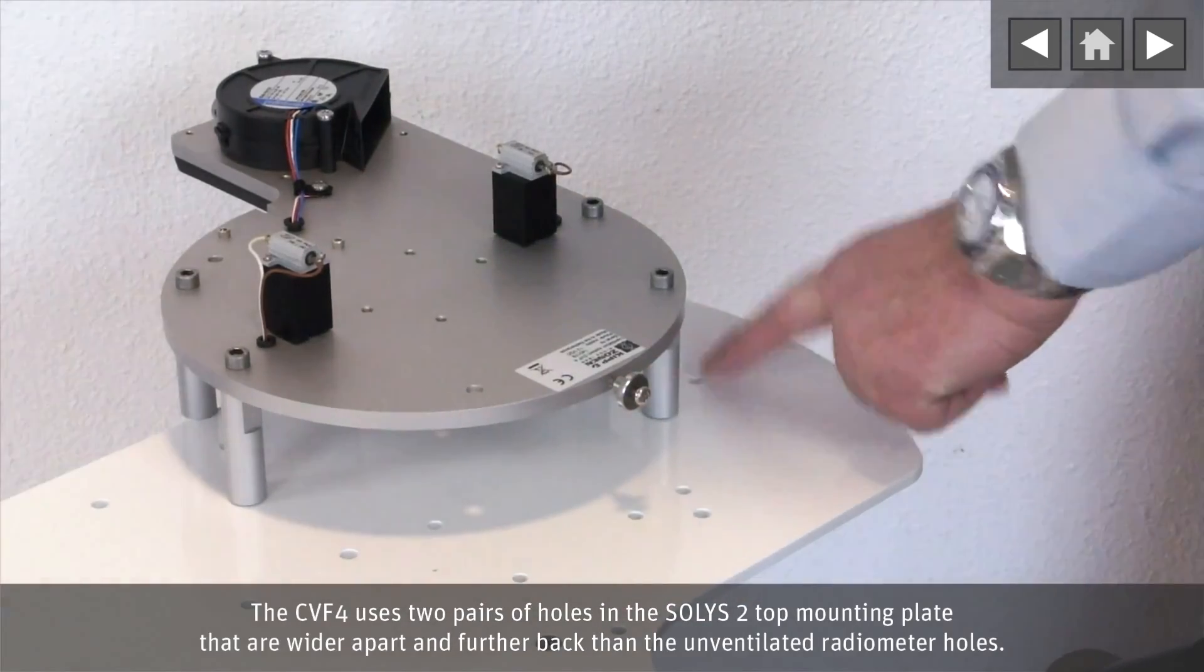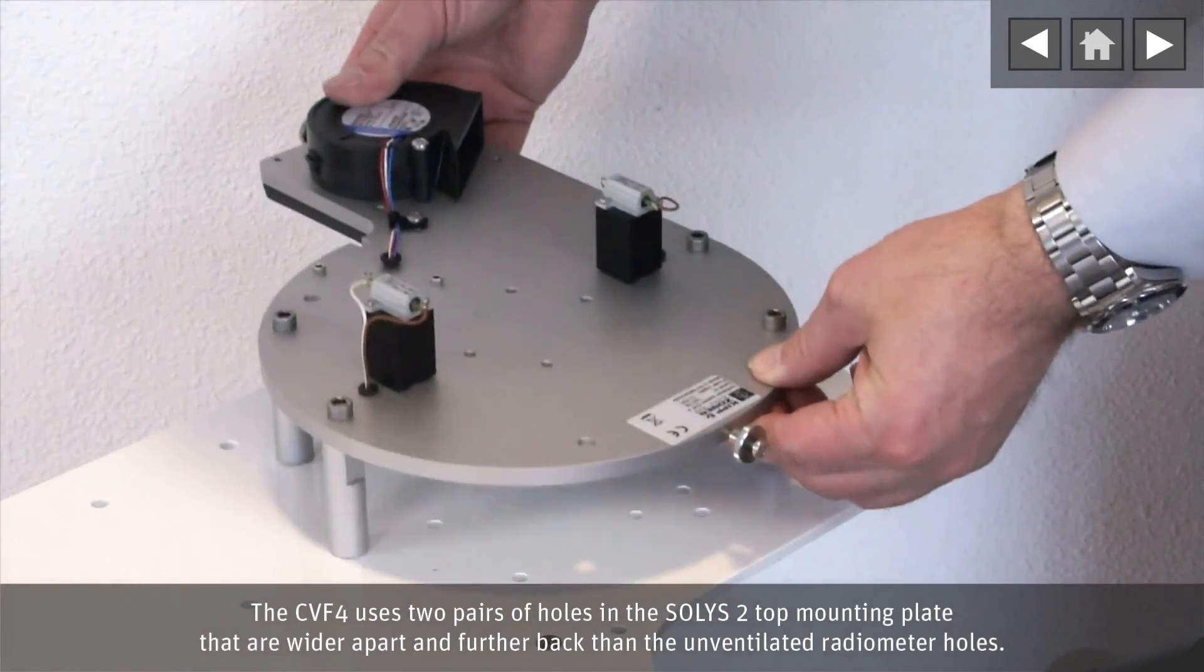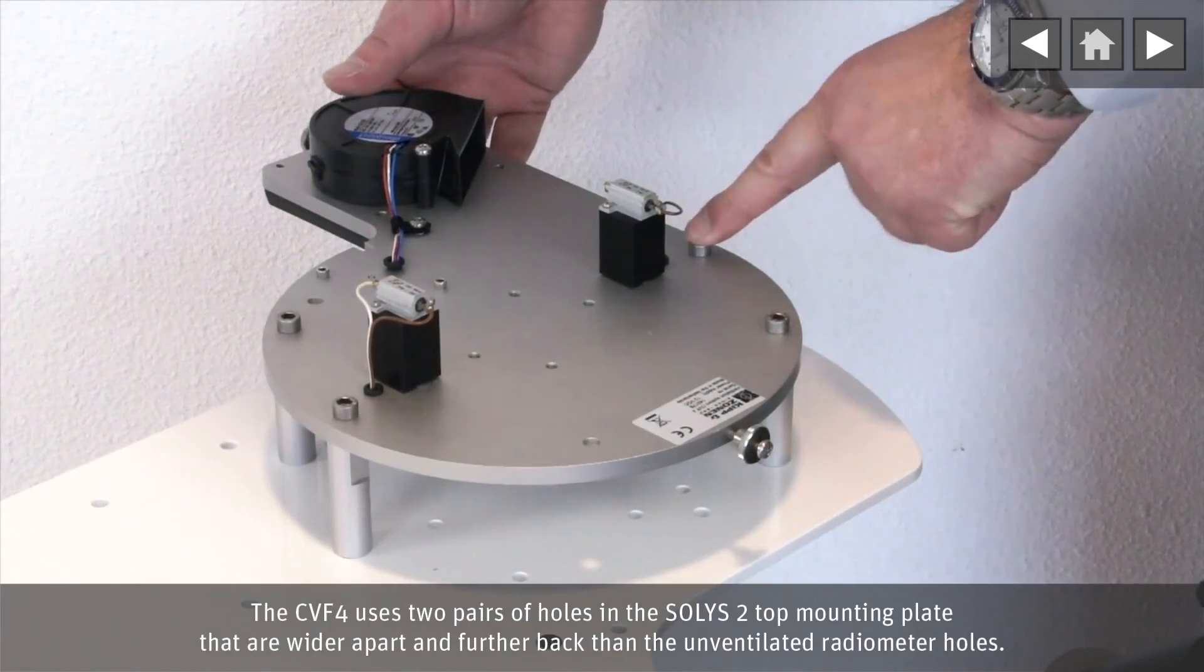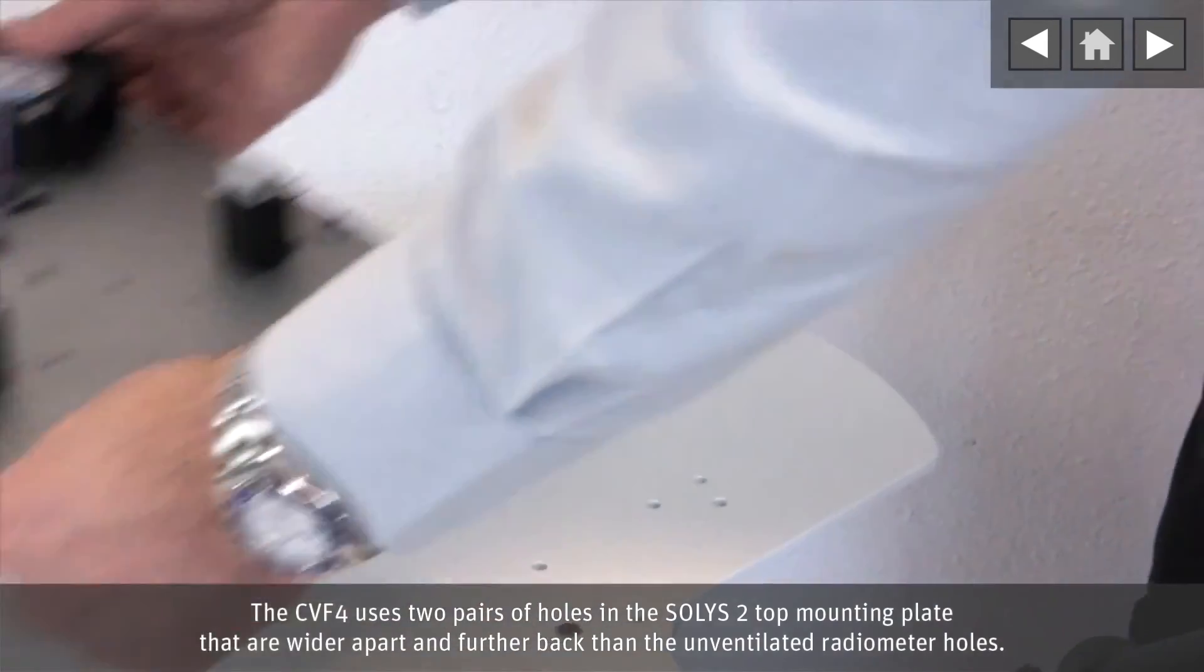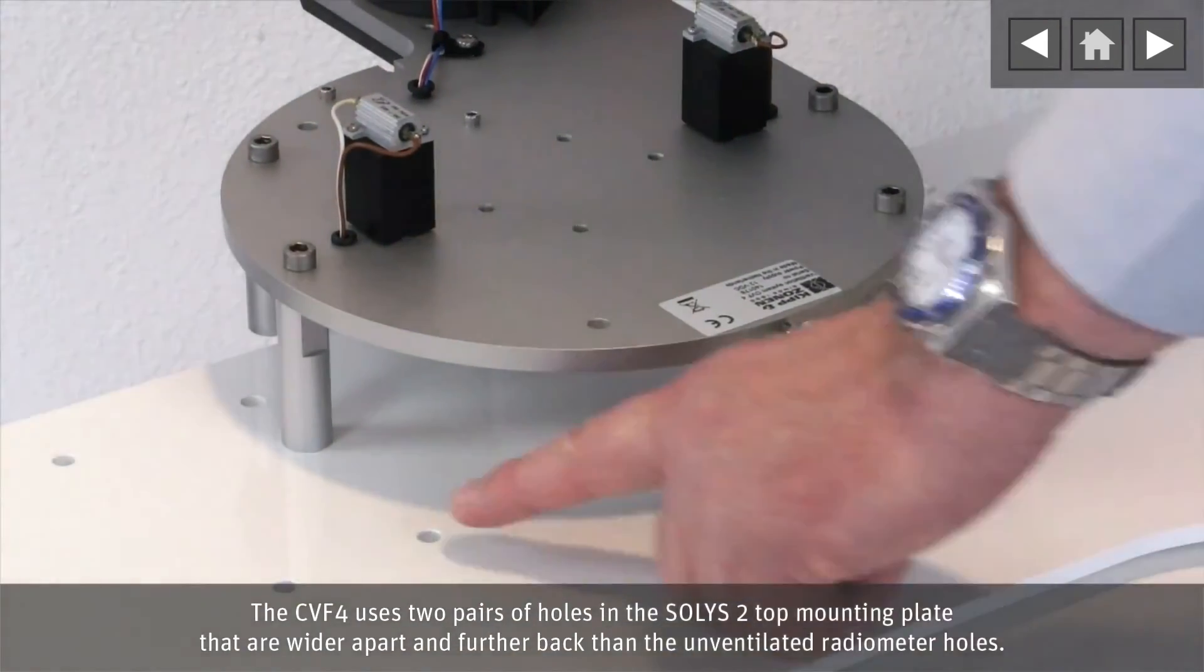The CVF4 uses two pairs of holes in the Solus II top mounting plate that are wider apart and further back than the unventilated radiometer holes.